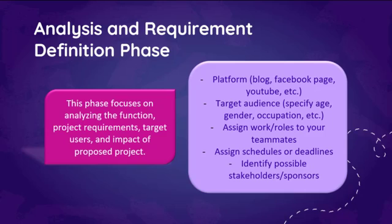You also need to define who your target audience is — their age range, gender, occupation, and if they are students, specific grade levels. If you are in a team, you assign work or roles to teammates. However, since we are online, it is quite difficult to have a team, so this project is assigned as an individual project. You can still collaborate with classmates if needed. Also, assign schedules or deadlines, and identify possible stakeholders or sponsors if you are serious about the advocacy plan — you can even work with your local government units or barangay to promote your website.